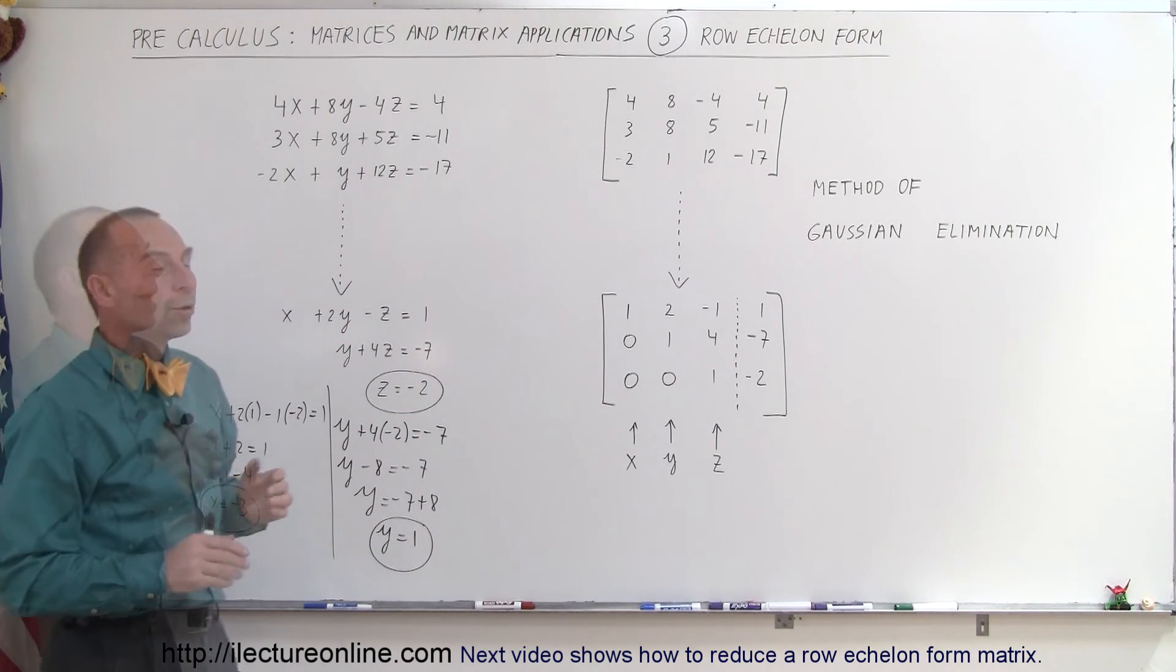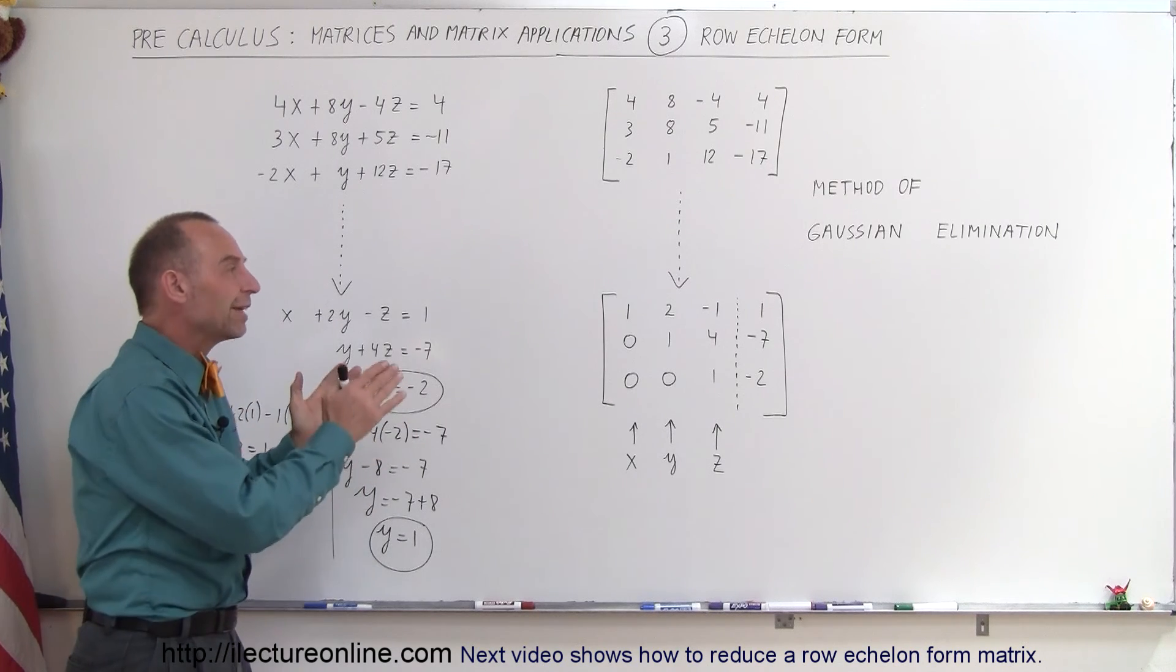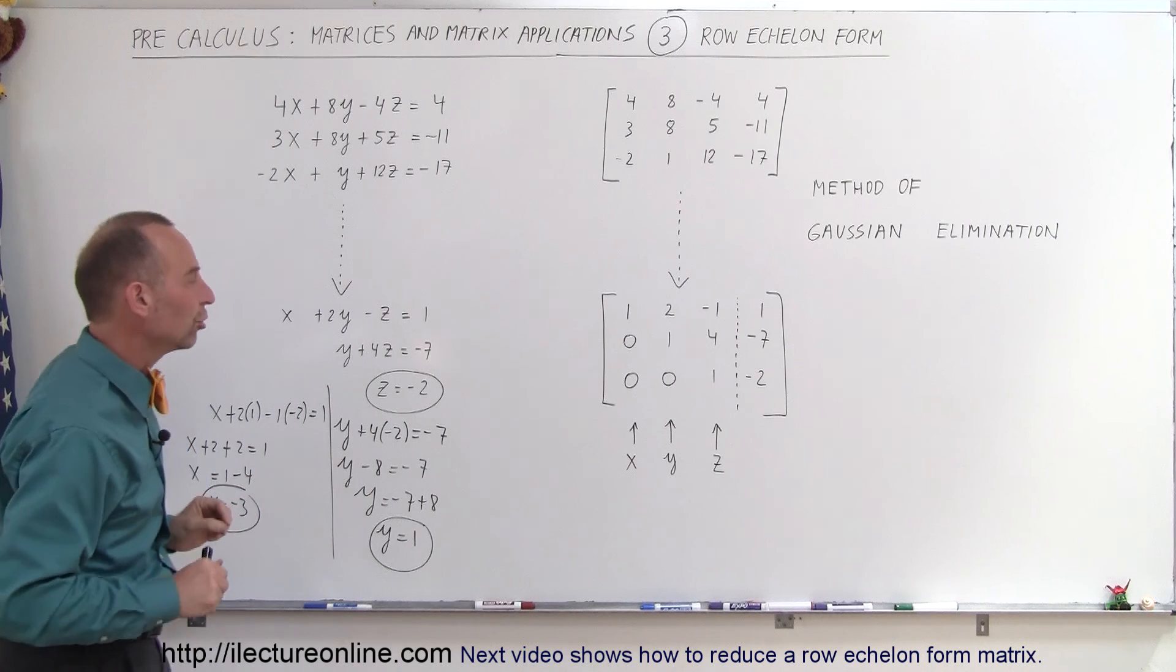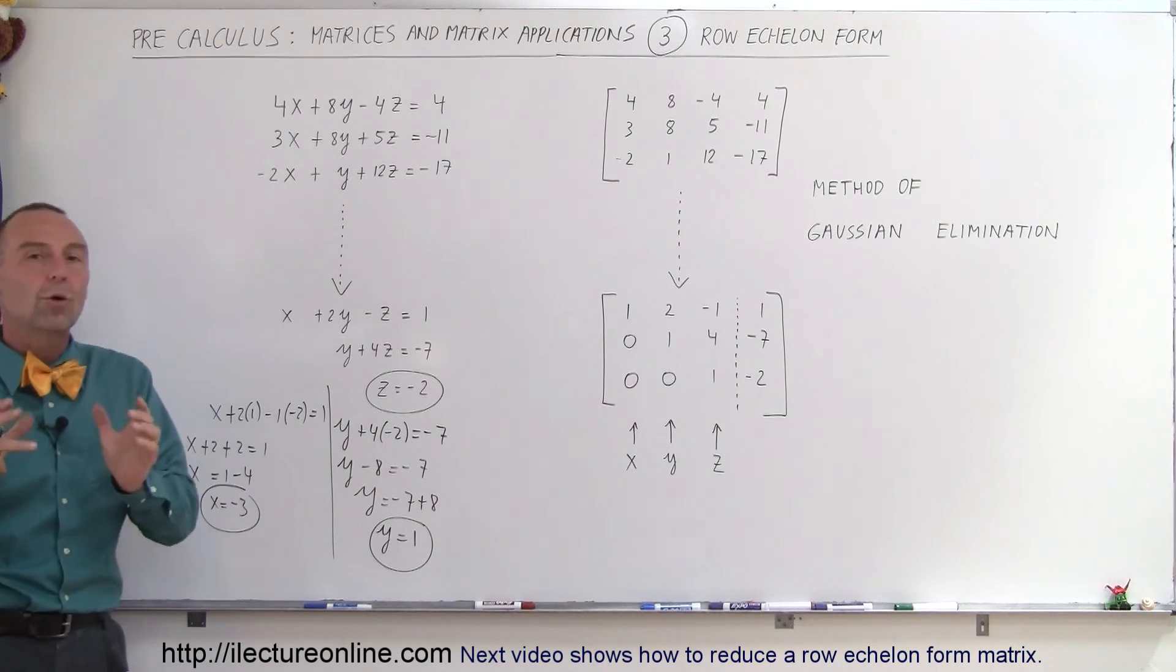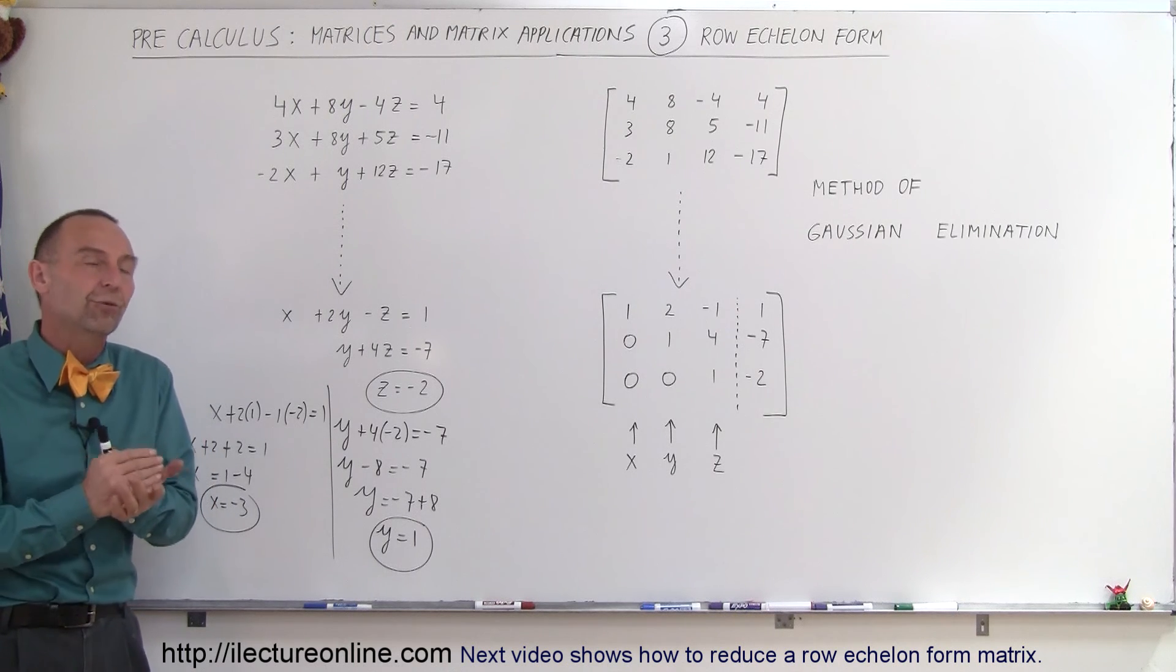In addition to that, we also have what we call the reduced row echelon form, which is another way in solving for x, y, and z, and we'll show you that in some other videos coming up very soon. But here, first, we're going to learn how to do the row echelon form, and then we're going to show you how to find the reduced row echelon form.